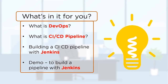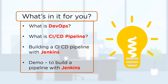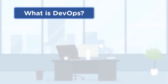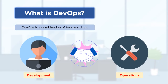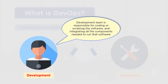The first topic is what exactly DevOps is. DevOps is basically a combination of two practices: development and operations. Development is responsible for doing the development and preparing the source code, while operations is responsible for deploying the source code to a specific environment — whether it's production or any other environment — and managing tasks like creating virtual machines, patching, and more.